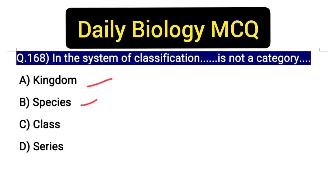Kingdom, species, class - these are the three categories, taxonomic categories. But the D option is not asked here. The D option will be correct for this MCQ.